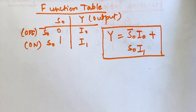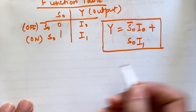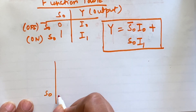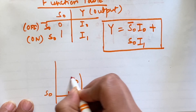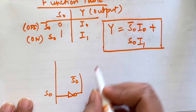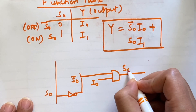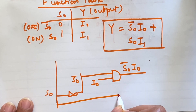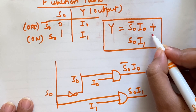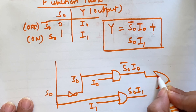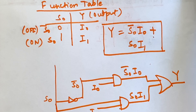So the expression for the output of the 2-to-1 multiplexer is Y = (S0-bar · I0) + (S0 · I1). Now we will make the circuit using logic gates. We take S0 through a NOT gate to get S0-bar. The first AND gate takes S0-bar and I0 to produce S0-bar · I0. The second AND gate takes S0 and I1 to produce S0 · I1. Finally an OR gate combines both terms to give output Y. If the video was helpful please share with your friends and subscribe to the channel.